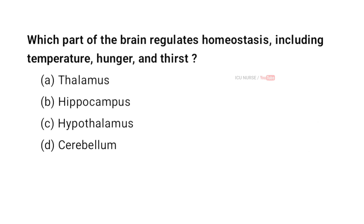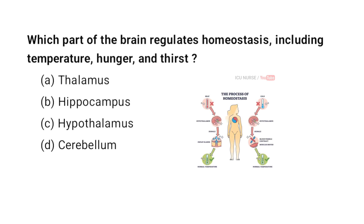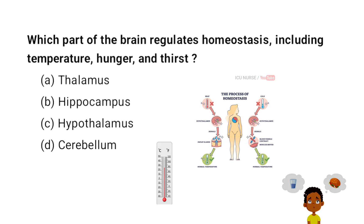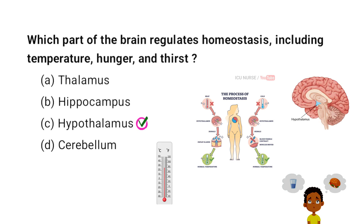Which part of the brain regulates homeostasis, including temperature, hunger, and thirst? A. Thalamus, B. Hippocampus, C. Hypothalamus, D. Cerebellum. And the correct answer is C. Hypothalamus. The hypothalamus regulates homeostasis by controlling body temperature, hunger, and thirst, maintaining internal balance in the body.